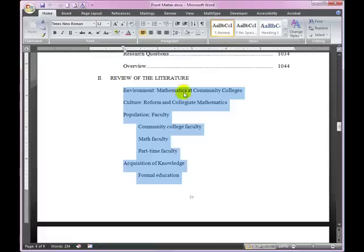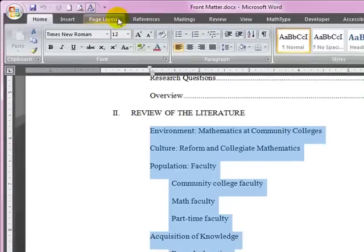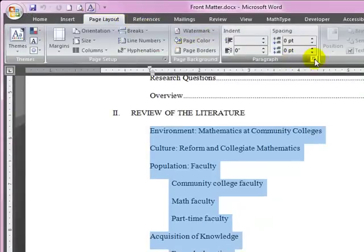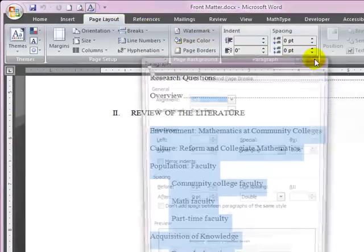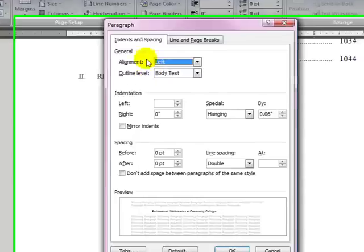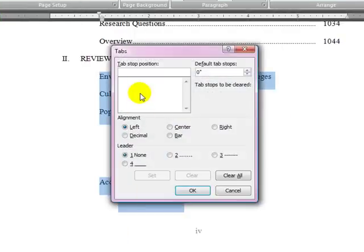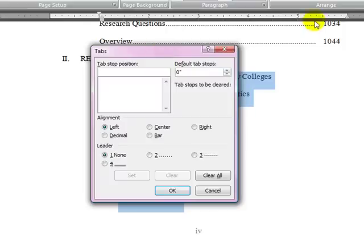Let's highlight the text where we want to have the dot leaders and we'll go to page layout. On paragraph there's this little arrow you can open up and we want to choose tabs. The first thing we want to do is put a tab right here that's right justified and has a dot leader on it. So we're going to make that tab stop position about five point three seven five on my screen and we're going to set that.